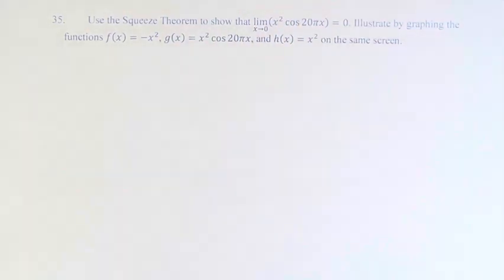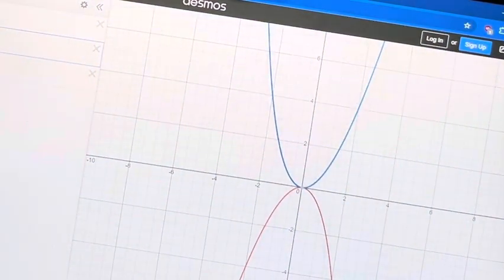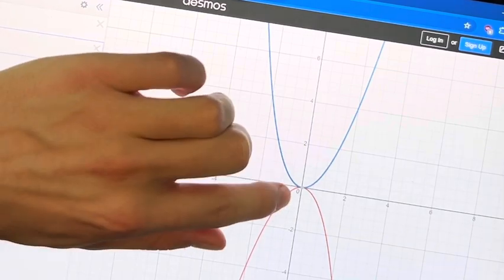So if we pull up our graph of just x squared and negative x squared, we can see, and also we know if we just plugged in 0 directly, that the limit as x approaches 0 of these two functions is 0. We can see that they're going to 0.